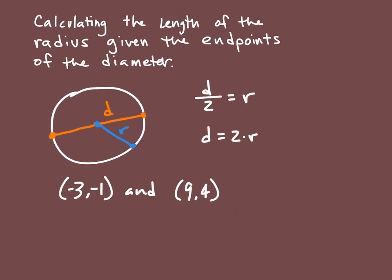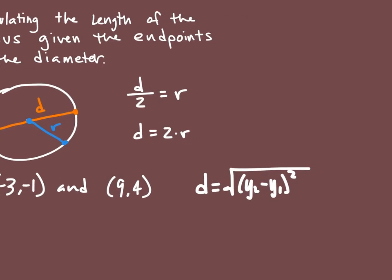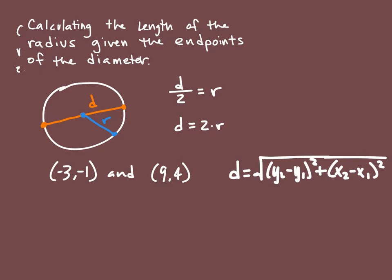So the first thing I want to do is use our distance formula. Our distance formula is given to us by d equals the square root of (y2 - y1) squared plus (x2 - x1) squared. And when I do that, I want to label these points as x1, y1, x2, y2. Same thing that would apply if you're using the midpoint formula or the slope formula.